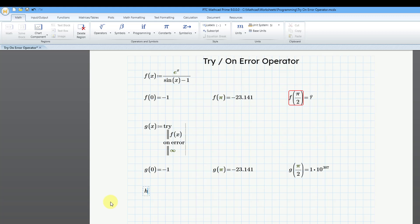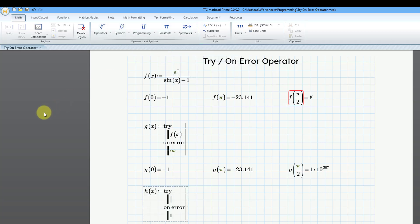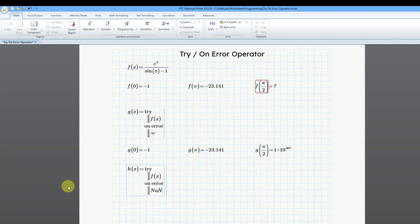Let's do h as a function of x. Then I'll use the definition operator, the colon key. This is going to be equal to, let me go to my programming. And here we have the try operator. The keyboard shortcut is ctrl and the left bracket. But I'll type in try, and let's do our f of x. And then in the other placeholder, I'm going to put in capital N, little a, capital N.